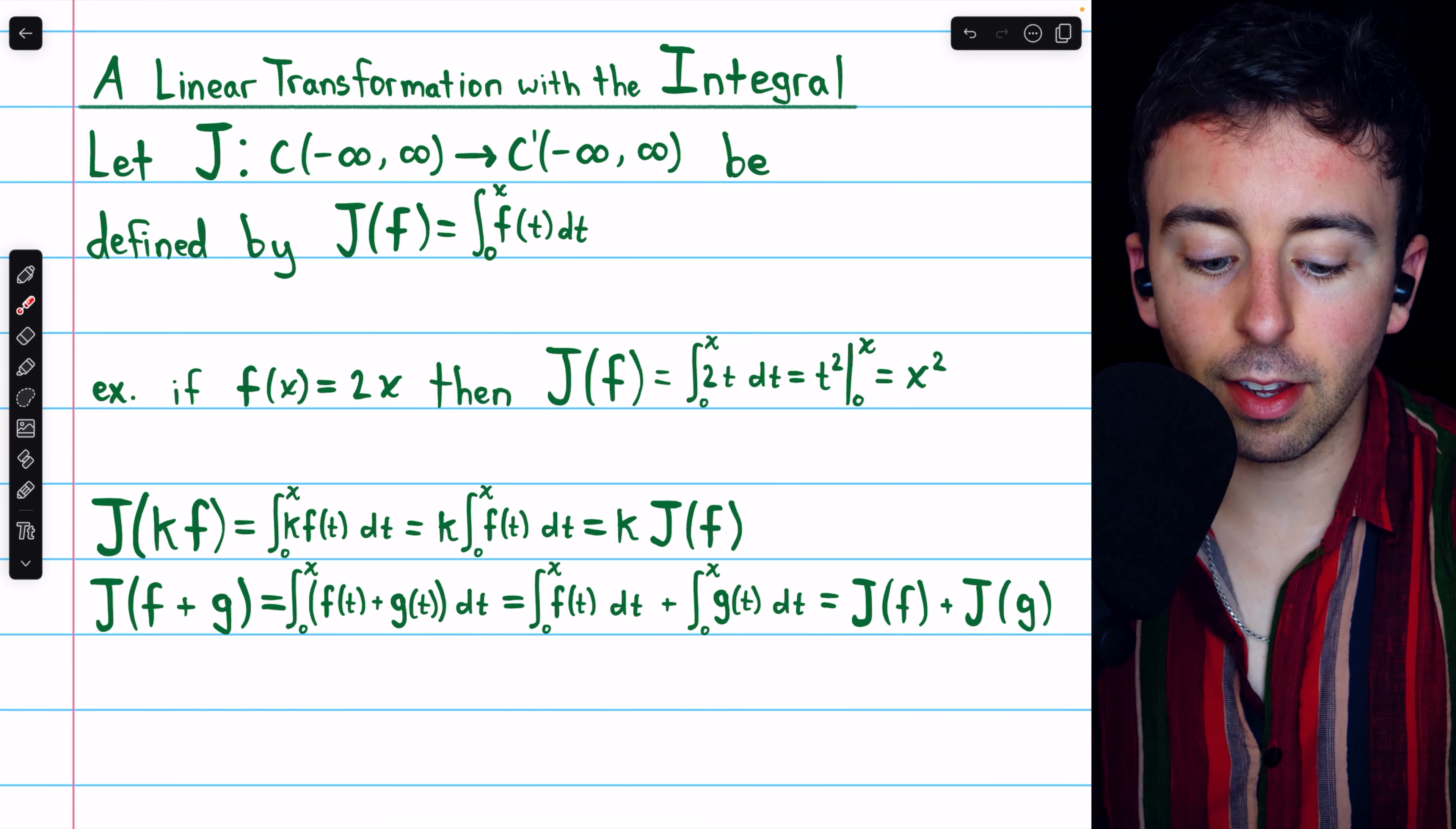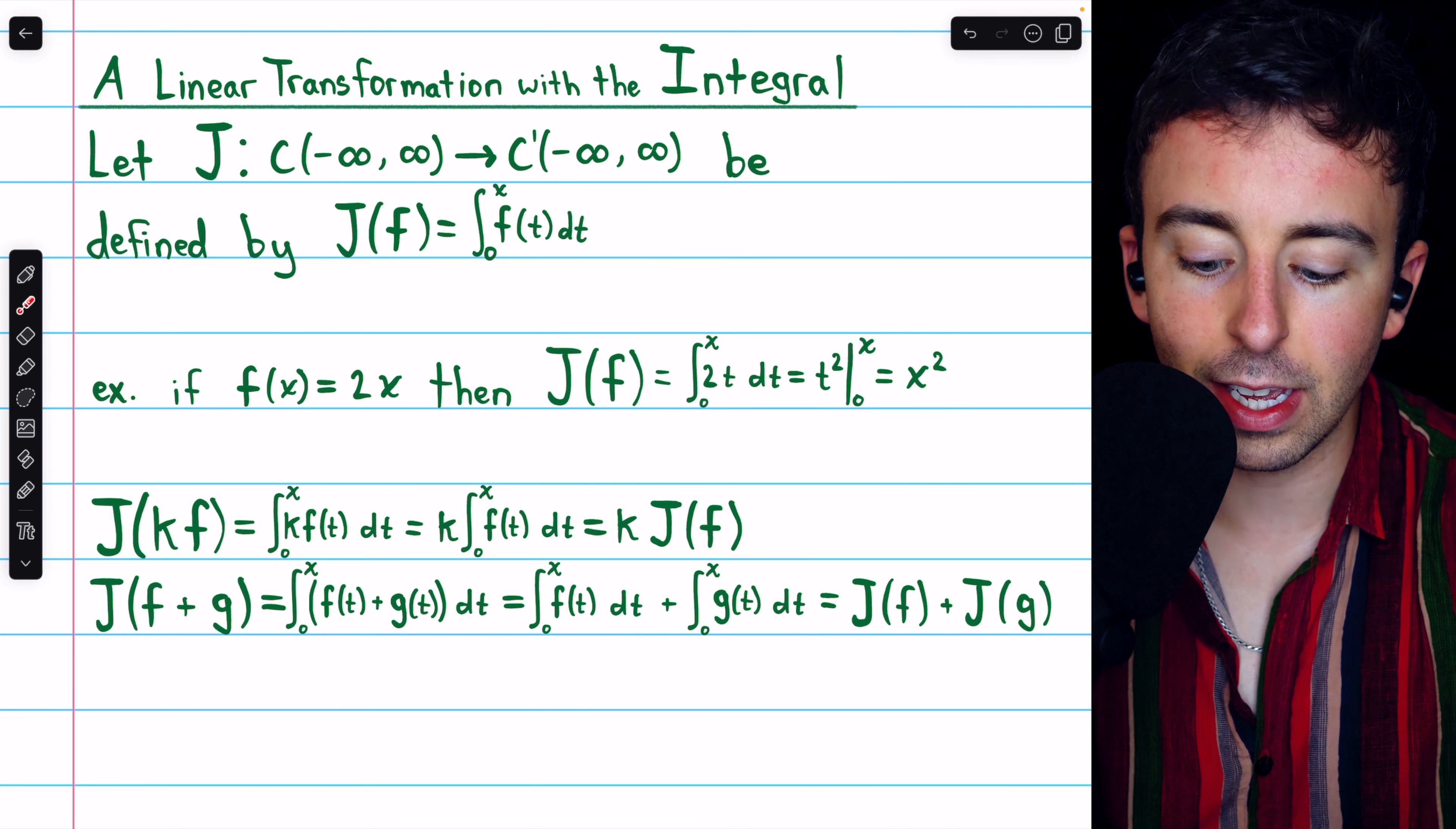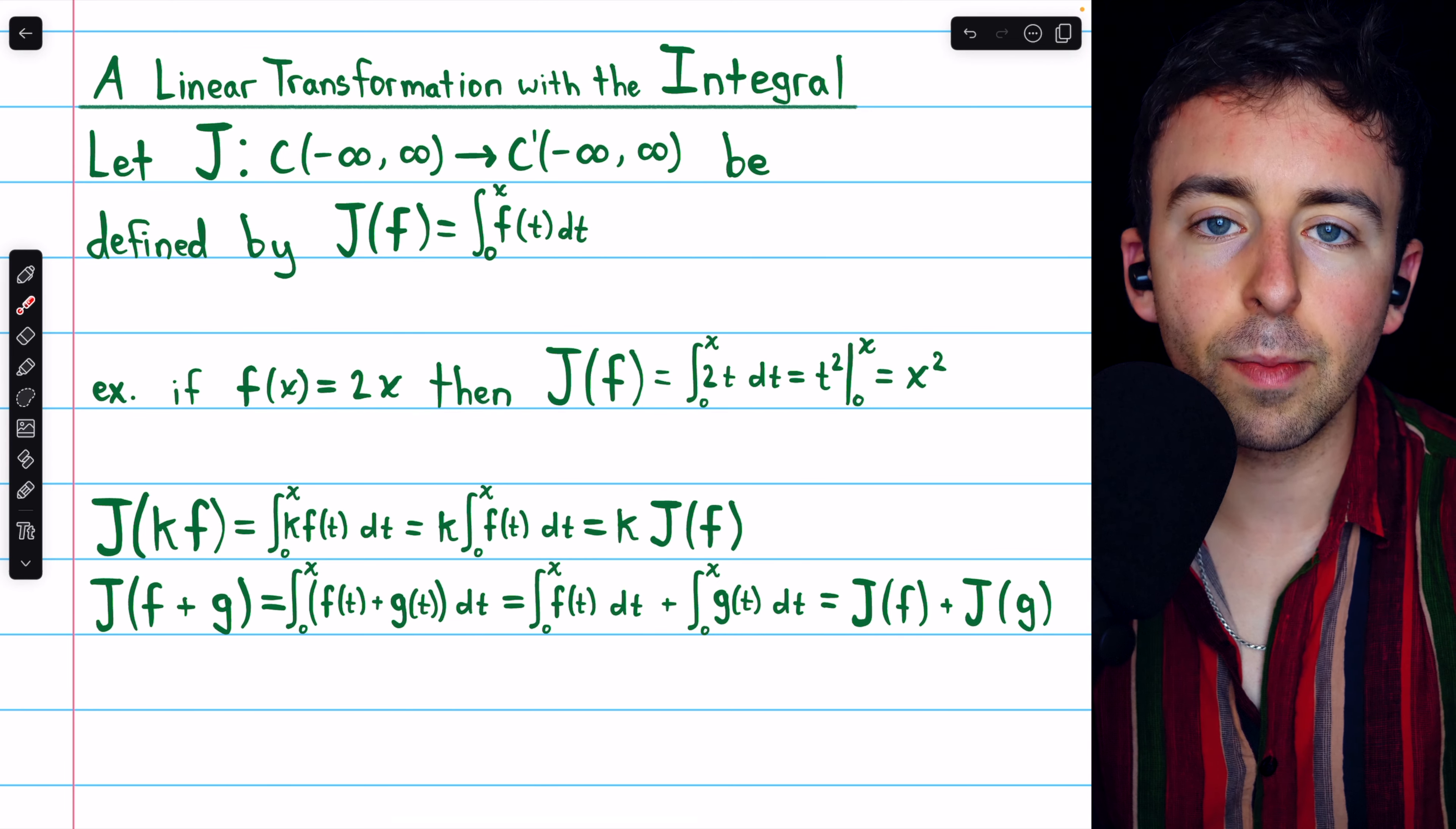So our mapping J maps 2x to x squared. This is clearly a linear transformation by familiar properties of integrals. J of k times f is just going to be the integral of that scalar k times f from 0 to x. And we can pull the scalar k out of the integral, which of course just leaves k times J of f.